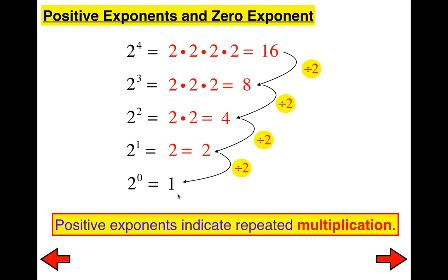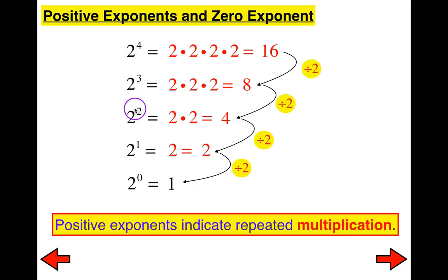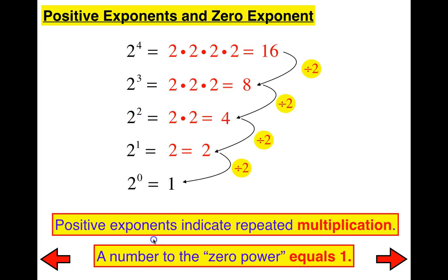Here's the fact: positive exponents indicate repeated multiplication — two times two times two times two for two to the fourth, two times two times two for two cubed, two times two for two squared, et cetera. But the other important fact is that a number raised to the zero power is always one. Always. It doesn't matter how big or small the number is — if it's raised to the power of zero, it equals one.